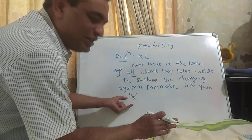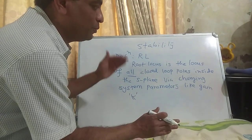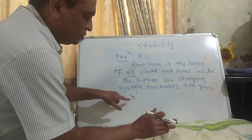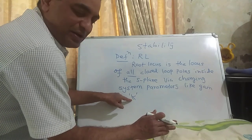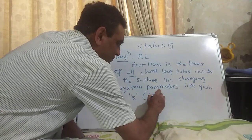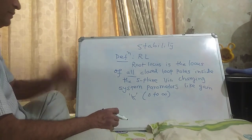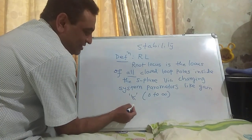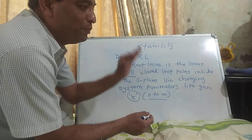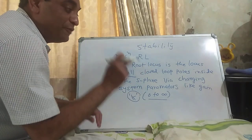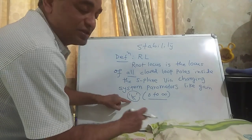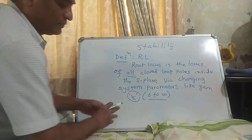Let us see an example of how, if we vary the system parameter — like gain K from 0 to infinity — the position of closed-loop poles changes. We would like to know and address all these positions of closed-loop poles inside the S-plane when gain K is changing. Let's say I have an open-loop system G(s) = K / [(s+1)(s+2)]. This means s = -1 and s = -2 are the open-loop poles, and there are no zeros in this system.